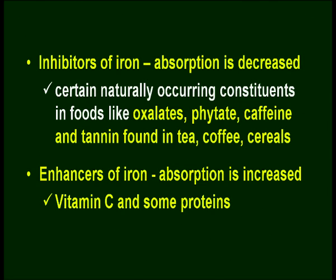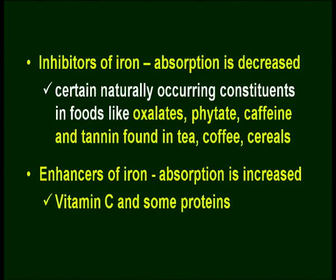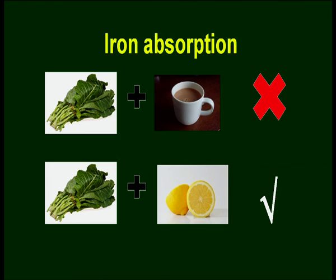There are inhibitors that decrease the absorption of iron. Certain naturally occurring constituents in foods like oxalates, phytates, caffeine, and tannin — found in tea, coffee, and cereals — hamper the absorption of iron. At the same time, vitamin C and some proteins can increase iron absorption, so they are known as enhancers of iron. If you eat iron-rich food along with tea, it will not be absorbed by the body. If you eat iron-rich food along with vitamin C or some citrus food, it will be absorbed.